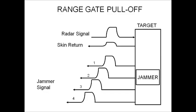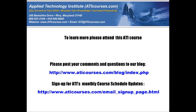This is an example of one of the jamming techniques we describe functionally. This one is called range gate pull-off, and it's a technique that steals the range tracking from the radar and convinces the radar that you're someplace else. This is the way we explain it functionally. So that's what we cover in this course — we think it's an extremely valuable two-day introduction to electronic warfare.